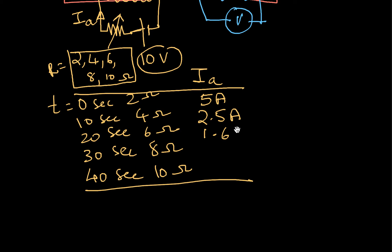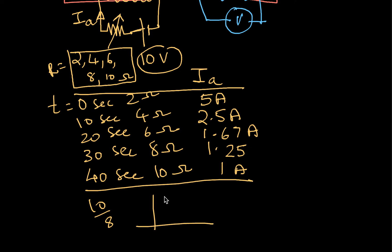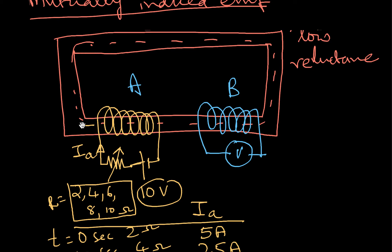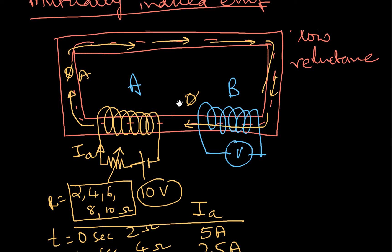At 6 ohms the current is 1.67 amperes, and at 10 ohms it's 1 ampere. So the current IA reduces in steps. Whenever the current changes, there's a flux φA set up in the core, which travels through the core and links with coil B as well.